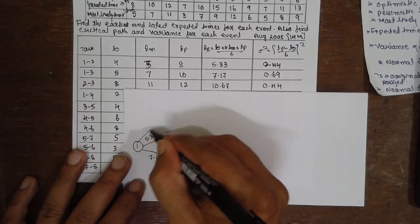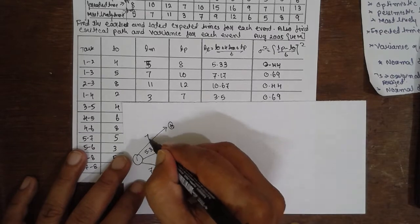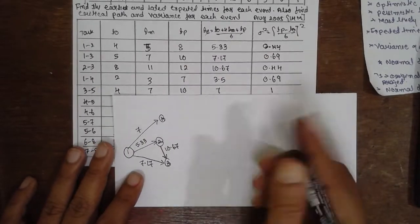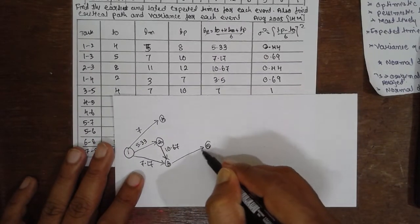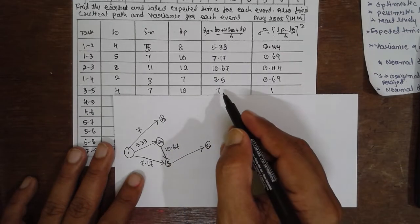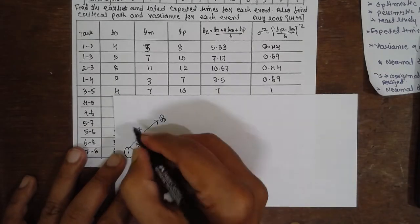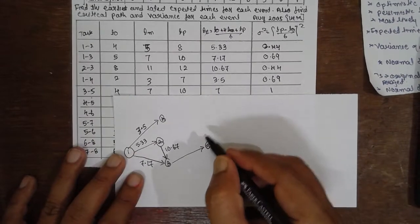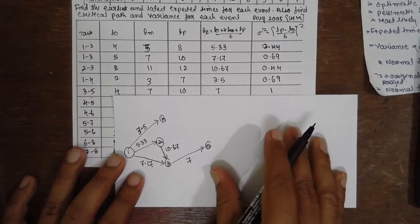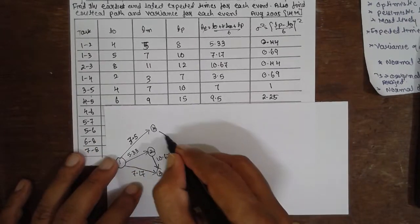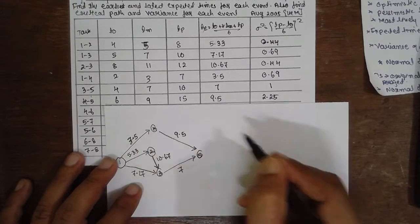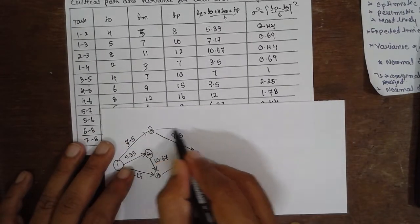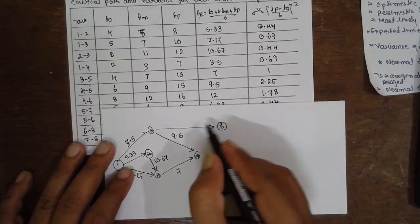Node 1 connected to 4 with value 3.5. Node 3 to 5 with value 7. Node 4 to 5 with value 9.5. Node 4 to 6 with value 12.